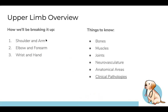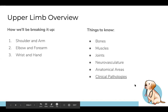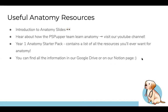Today it's mostly the shoulder and arm — and remember, arm refers only to the region up to the elbow. Next week we'll cover the elbow and forearm, then wrist and hand. The slides are organized around: bones of the shoulder and arm, muscles, joints, neurovascular structures (nerves, arteries, veins), lymphatics, key anatomical areas, and clinical pathologies.